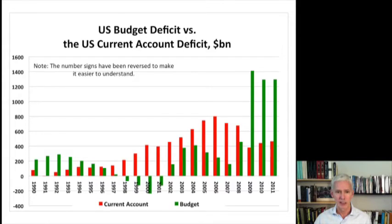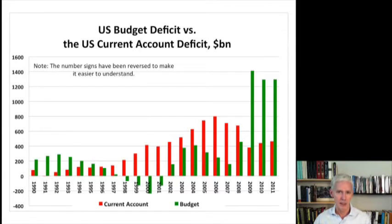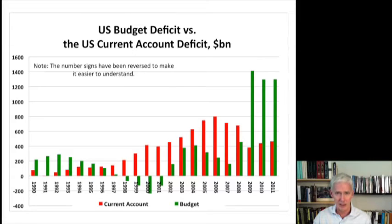Going back to 1996, you can see that the red bar was larger than the green bar for 12 years, from 1996 to 2008. The current account deficit was larger than the budget deficit. That meant it was very easy for the United States government to finance its budget deficits at very low interest rates, because foreign central banks alone had enough demand — enough dollar reserves — to buy every new Treasury bond issued, and had a great deal left over to buy other dollar-denominated assets. So what other dollar-denominated assets did they buy?